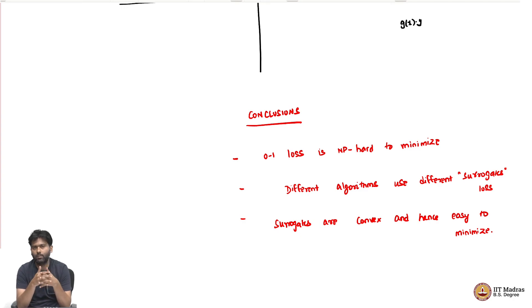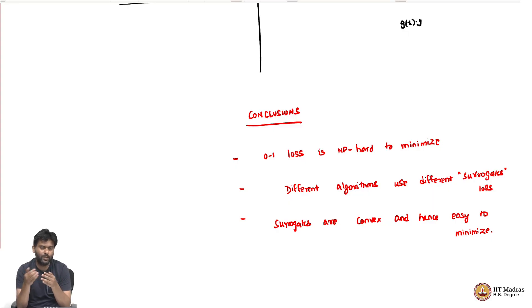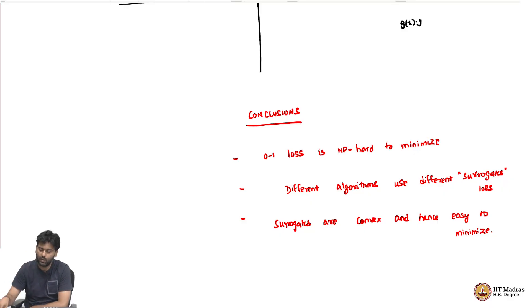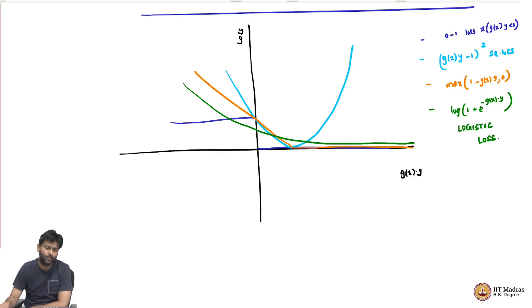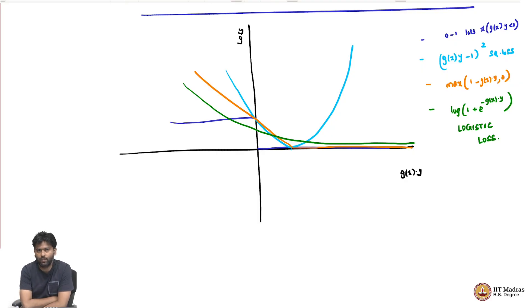The reason we want convexity is that we want a function which has only one minimum and it is easy to find that minimum. Convex functions have only one minimizer and it is easy to find them, so they act as natural choices for surrogates. Different convex functions can be used, and depending on which convex function you choose, you get different algorithms. There are several other losses people have come up with, for example Huber's loss, which also leads to different types of algorithms.